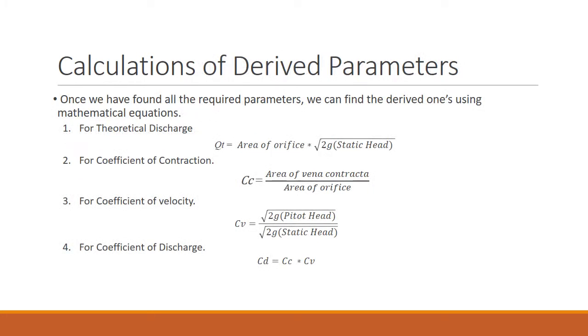Coefficient calculation of these derived parameters. Once we have found all the required parameters, we can find the derived ones using mathematical equations. For theoretical discharge, we multiply the area of the orifice by the square root of two times the gravitational acceleration times the static head. For the coefficient of contraction, we simply divide the area of the vena contracta, as we have previously measured, by the area of the original orifice.